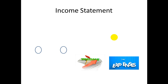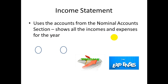So let's move on to the income statement. By definition, the income statement basically reflects the profit or loss a business has made during a specific time period — it tells you that in this year you made this amount of profit or this amount of loss. It uses the accounts from the nominal account section. Remember, the trial balance is divided into the balance sheet section at the top and the nominal account section at the bottom, which includes things to do with incomes and expenses.